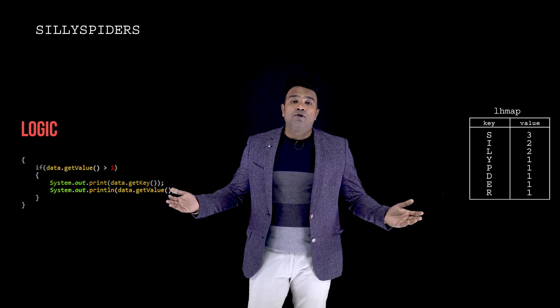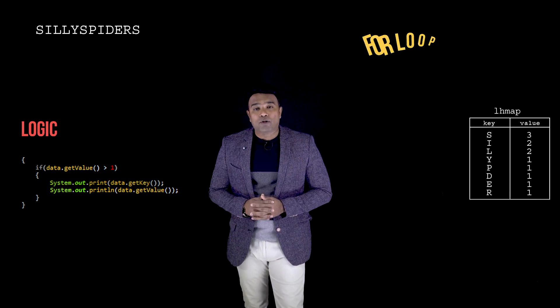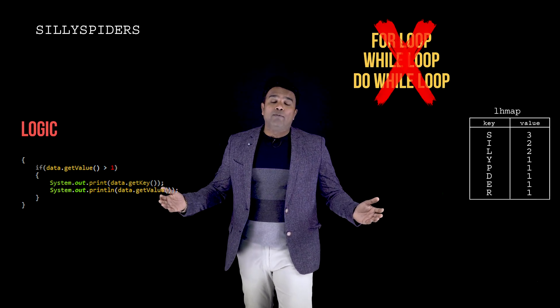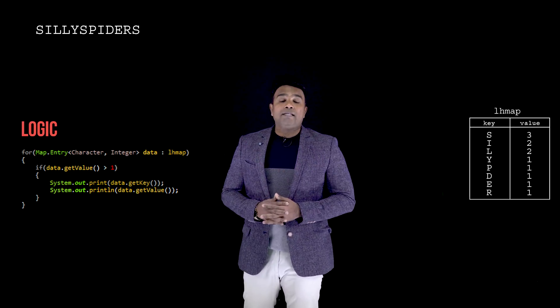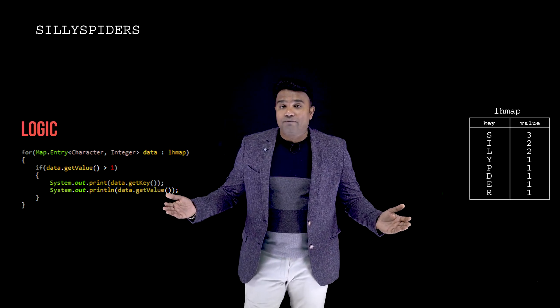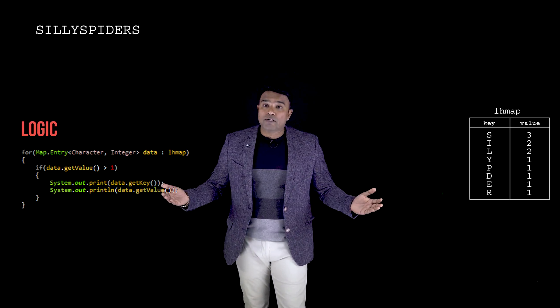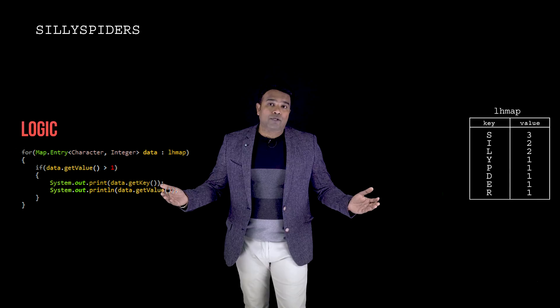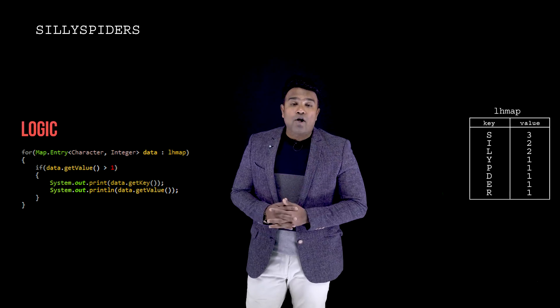I would not be making use of a traditional for loop, while loop, or do-while — rather, I use the for-each loop. This for-each loop helps me travel along the entire length of my LinkedHashMap, and each time it checks if the value is greater than one. If it is, it prints both the key and the value. That is the expected output. When I apply this logic on my input string, let's see what happens.